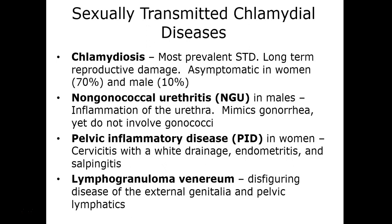If bacteria ascend up the urinary tract, much more severe secondary conditions like pelvic inflammatory disease can result, damaging the fallopian tubes in females — a condition known as salpingitis, which leads to infertility. Lymphogranuloma venereum causes disfigurement to the external genitalia and can damage the lymph nodes in the pelvic lymphatic system.